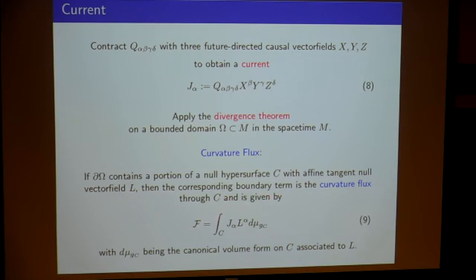For many space-times the Hawking mass has a limit at null infinity, and this is what we call the Bondi mass. The Bondi mass measures how much radiation has escaped, or how much mass is still in the system. There's a Bondi mass loss formula: if U is the foliation parameter at null infinity and psi is the incoming shear — the News tensor — integrating that over the sphere at null infinity gives you the Bondi mass loss formula, saying how much mass has been radiated away.